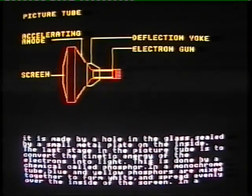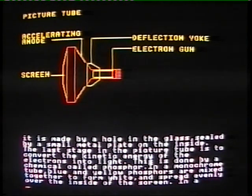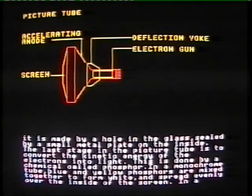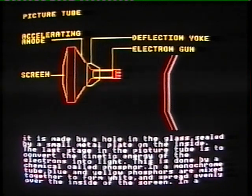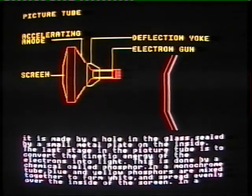The last stage in the picture tube is to convert the kinetic energy of the electrons into light. This is done by a chemical called phosphor. In a monochrome tube, blue and yellow phosphors are mixed together to form white and spread evenly over the inside of the screen.